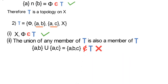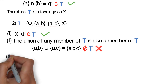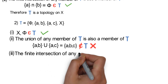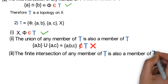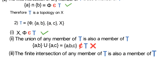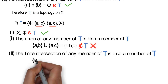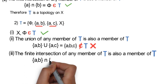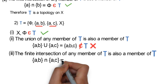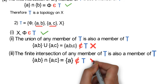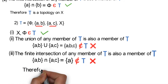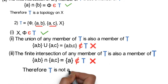Since condition 2 fails, this is definitely not a topology. But let's check condition 3 as well. Condition 3 states that the finite intersection of any member of tau is also a member of tau. Finding the intersection of the set {a, b} and the set {a, c} gives the set {a}, which is not a member of tau. So condition 3 also fails. Therefore, tau is not a topology on X.